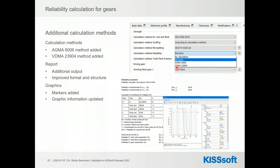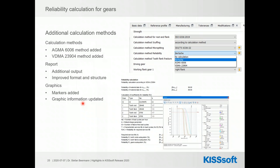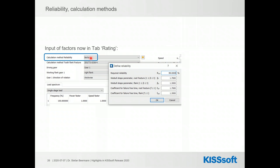We also added more output to the report, additional markers, and information to the graphics. Since we now have a dropdown list for selecting the calculation method, we added a plus button there — behind this button are the respective parameters for the currently selected method. Before you had to go to the module-specific settings to enter these parameters, which was not very convenient. Now it's much more accessible — you can just click the button and enter the data directly.